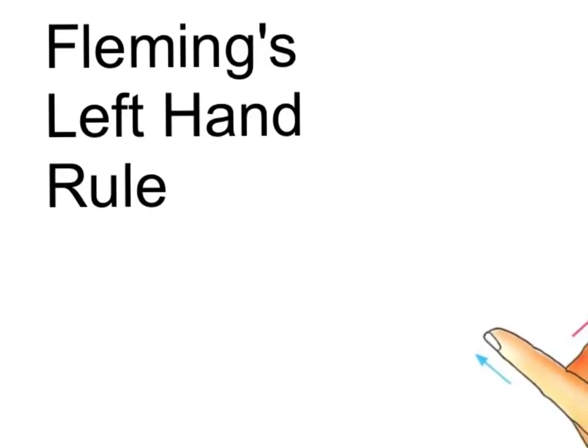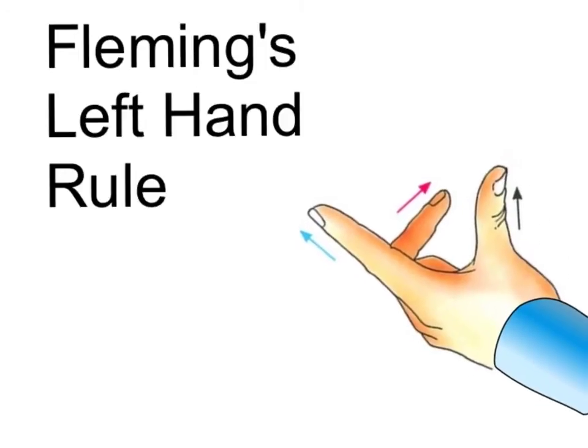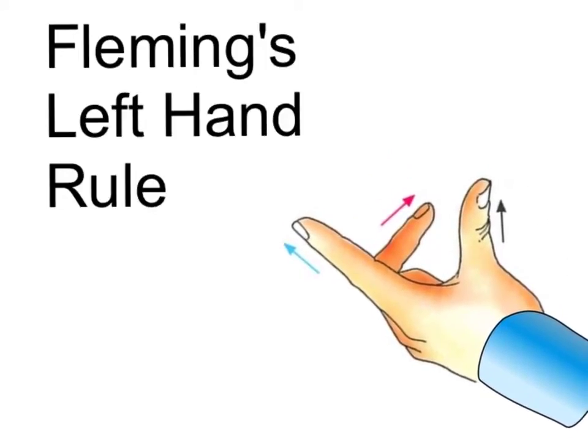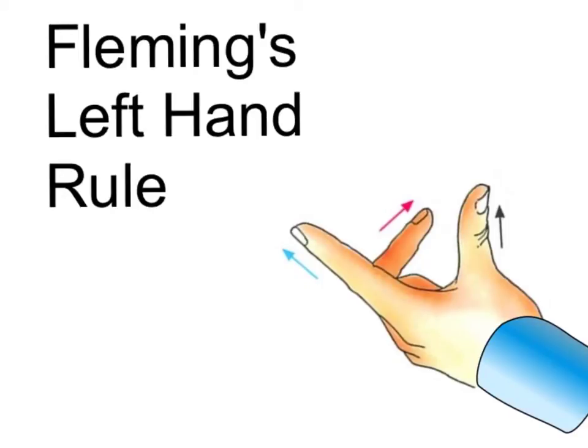So the first thing about Fleming's left-hand rule is its use of the left hand. Here we have a left hand. And what you do is you take your finger and your thumb and you point like you're making a pretend gun. So, thumb straight up in the air, first finger pointing straight out ahead of you. What you then do is make your second finger point out to the side.